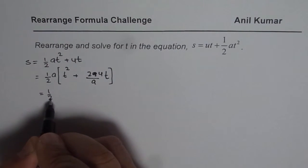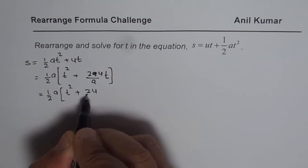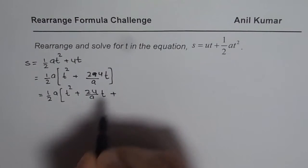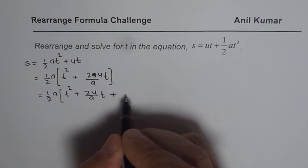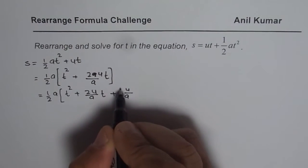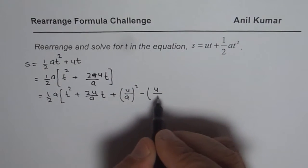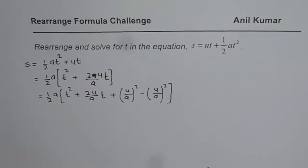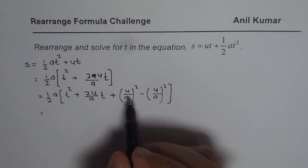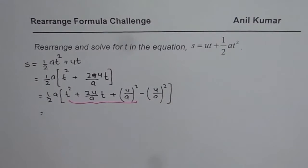Now the next step here is half of a, then we have t square plus 2u over a times t. We add and subtract half of this number. Half of this number will be u over a. So we will add and subtract u over a whole square. Add and subtract half of the coefficient of t, which is u over a. So when you add and subtract this term, you are kind of adding 0. Now once you do that, in that case, first three terms will form a perfect square.